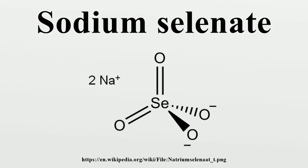One of the earliest applications of sodium selenate was in the glass industry. Selenium produces a red-hued glass. The molten glass is treated with sodium selenate and then arsenic trioxide to reduce the compound and provide elemental selenium. Sodium selenate is also used as a decolorizing agent in glass production. The red hue it gives glass is complementary to the green hue given by ferrous oxides in the manufacturing process. When used together, the two compounds produce a colorless glass.